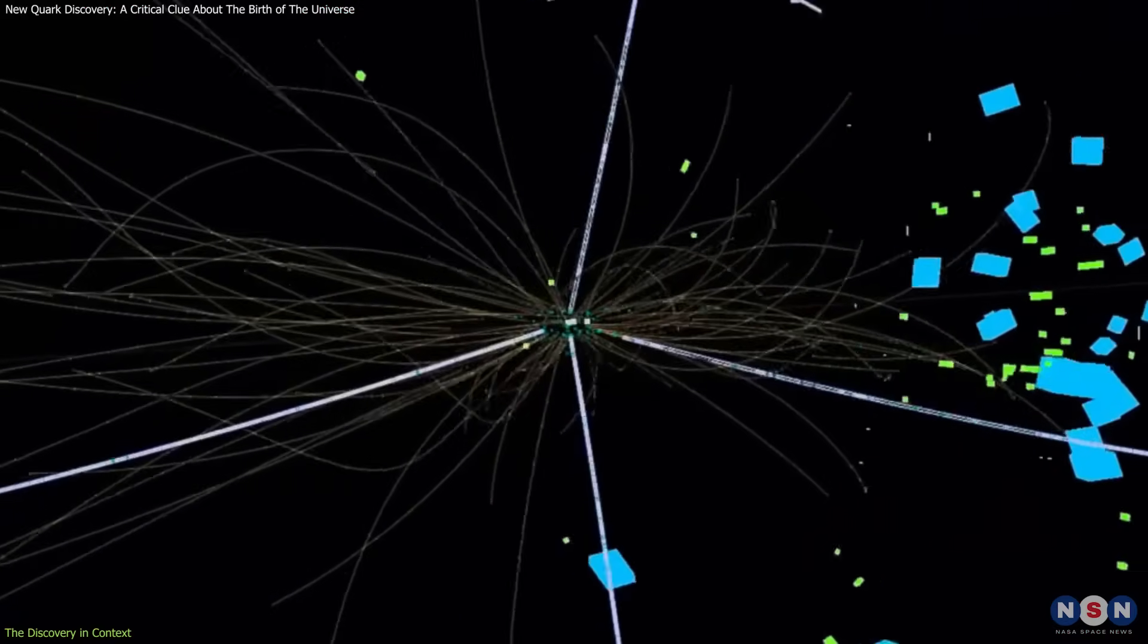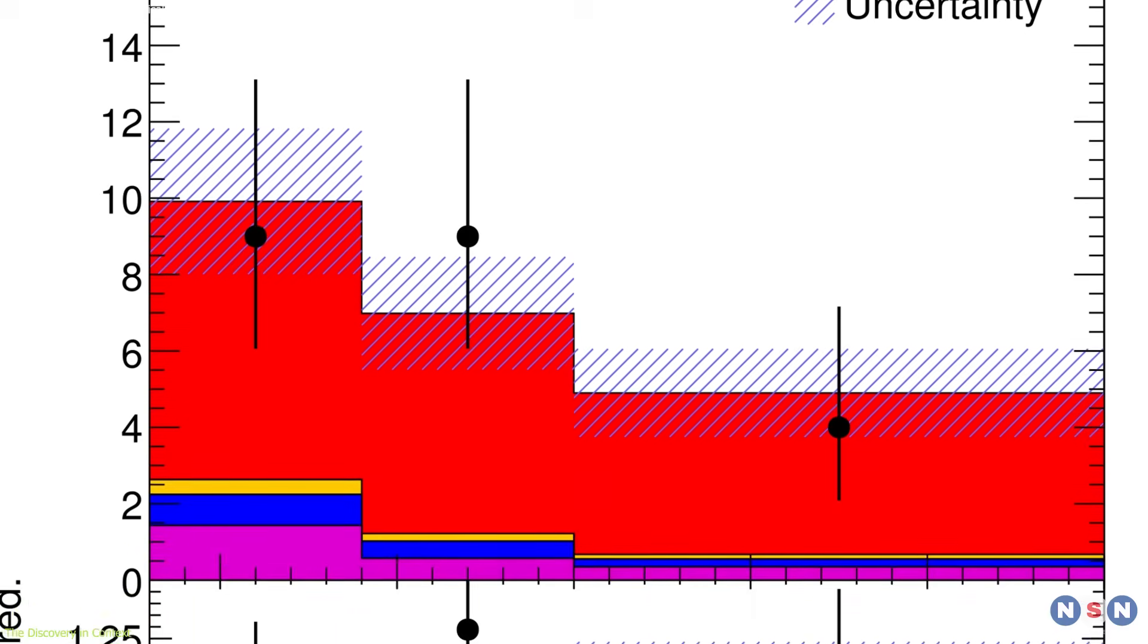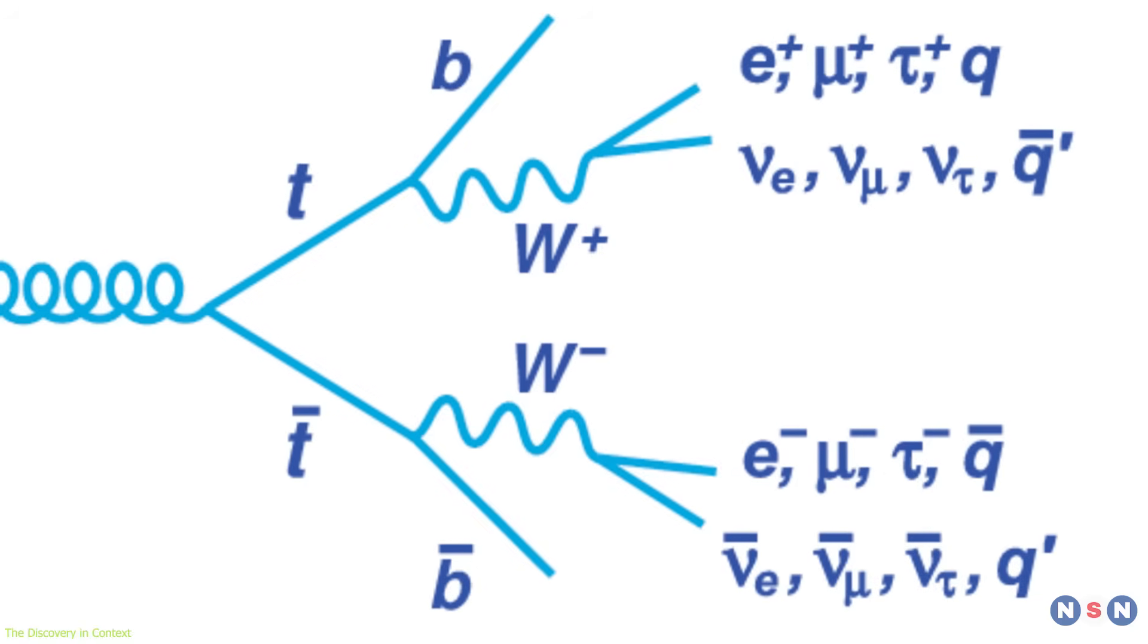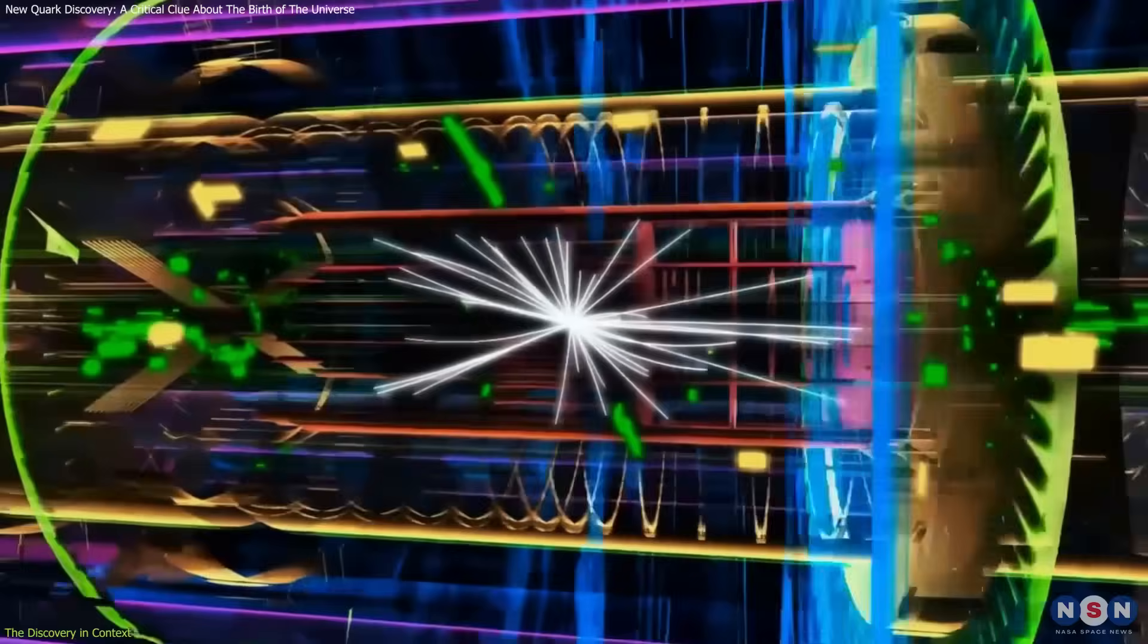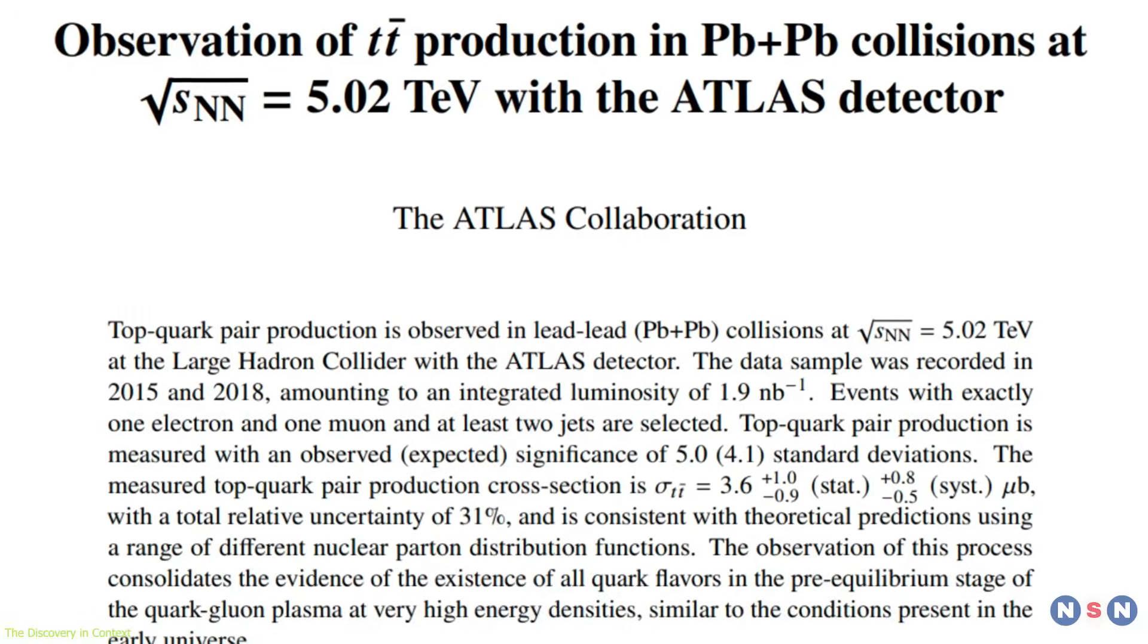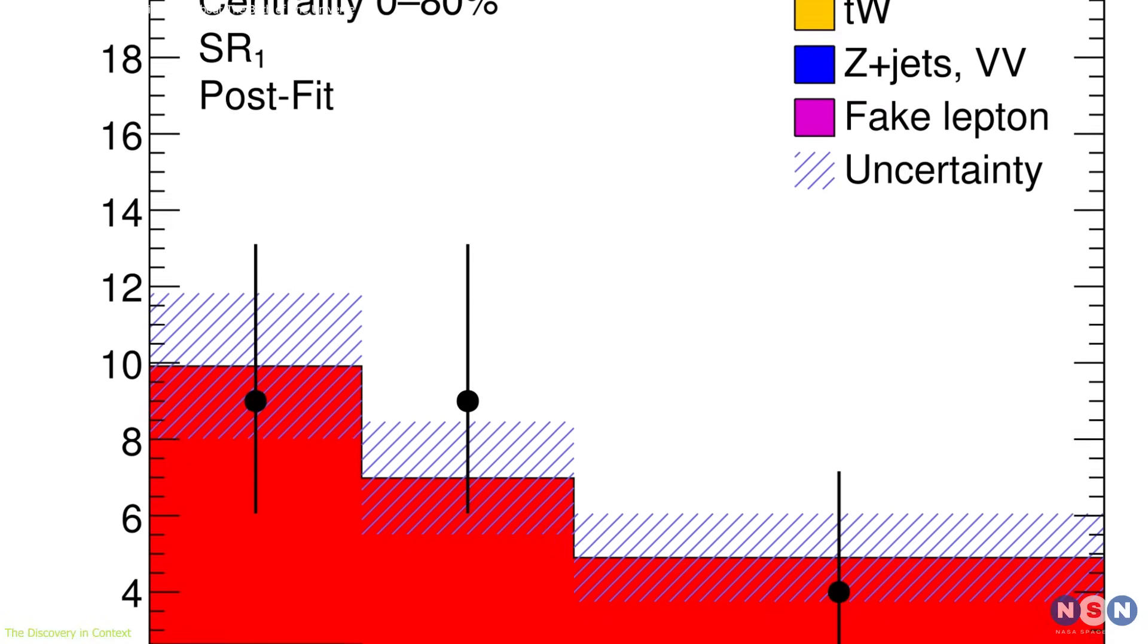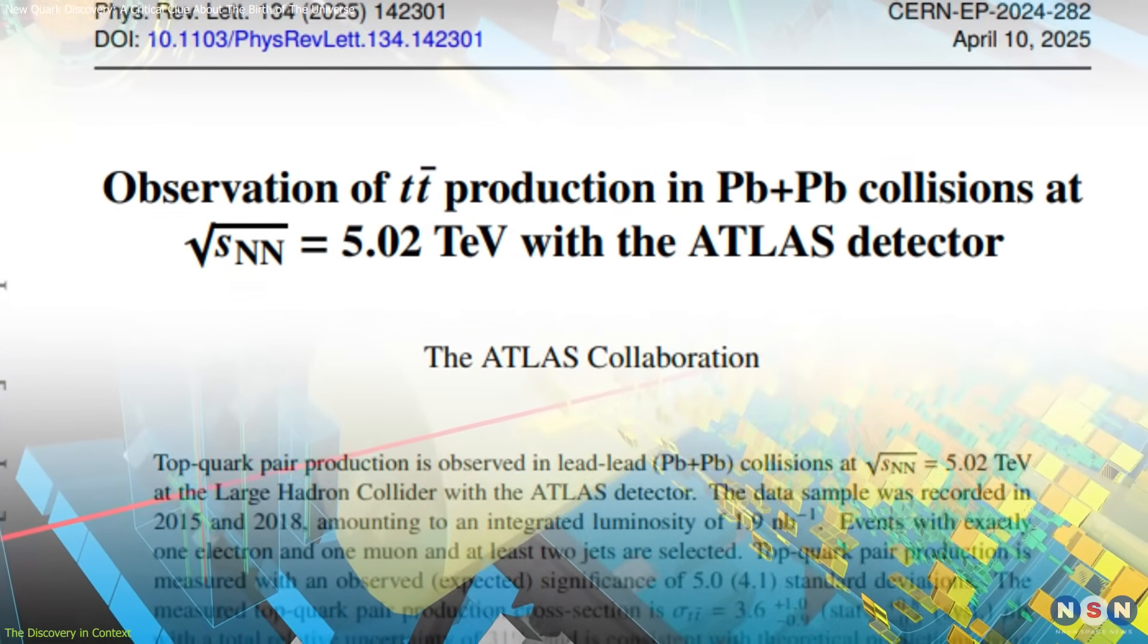Rather than seeing the quarks directly, the ATLAS team identified their decay products—a specific signal called the dilepton decay channel. In this process, each top quark decays into a bottom quark and a W boson, and each W boson further decays into a neutrino and either an electron or a muon. This precise signature helped them detect top quarks amid a sea of particles with remarkable precision. The observation cleared the 5-sigma threshold, with 5.03-sigma significance, meaning there's less than a 1 in a million chance this result was a fluke. That makes this a confirmed discovery and not a lucky statistical anomaly.